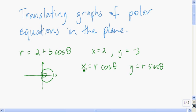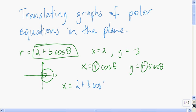To get these parametric equations, in place of each r we're going to put our equation 2 plus 3 cosine theta. So the x coordinate of each point will be 2 plus 3 cosine theta times cosine theta.